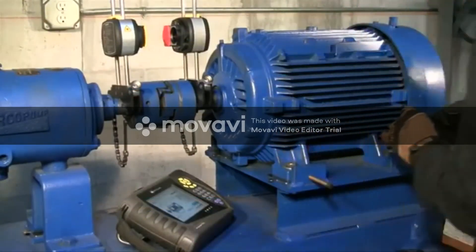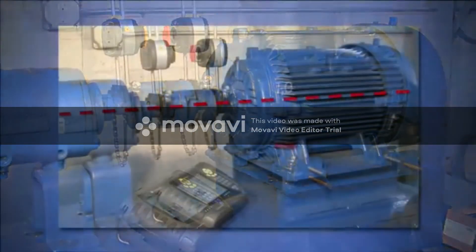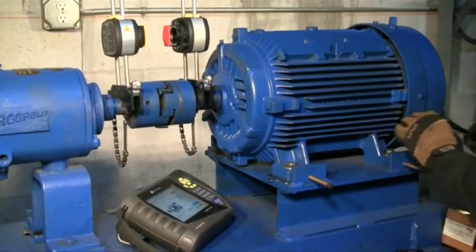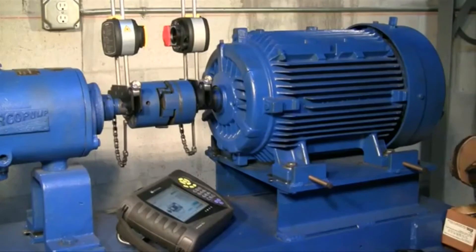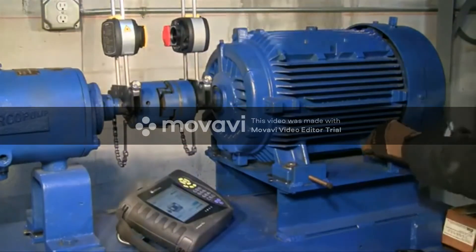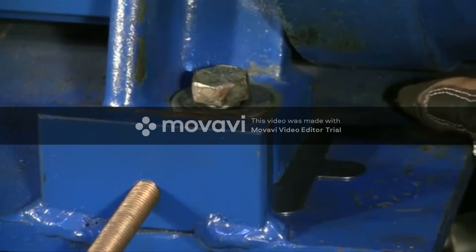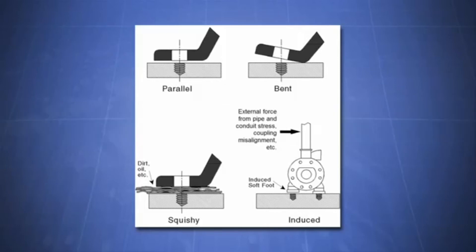If your soft foot values are greater than 2 mils, then you have a soft foot that needs to be addressed. Be aware that the numbers are not necessarily the actual gaps under the machine feet. When loosening and tightening the hold down bolts, we are measuring the effect of that particular foot on the shaft deflection, not the actual gap. If soft foot was detected, we will then measure the true gap under those feet using a feeler gauge. With this technique, we can determine the exact soft foot condition, such as a parallel air gap, bent foot, or deflecting base.